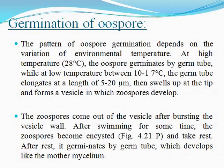Regarding germination of the oospore: it depends on temperature. If the temperature is 28°C, a germ tube develops directly. But if the temperature is between 10–17°C, the germ tube elongates approximately 5 to 20 micrometers, then swells up at the tip to form a vesicle in which zoospores develop. The spores swim for a period, then encyst, form a germ tube, and develop into a new mycelium, completing the life cycle.